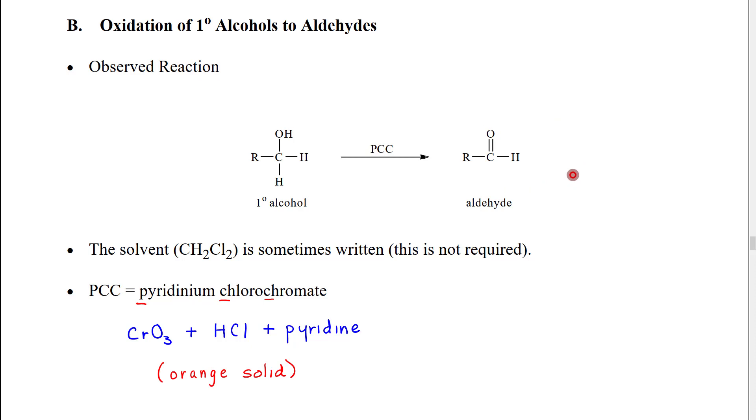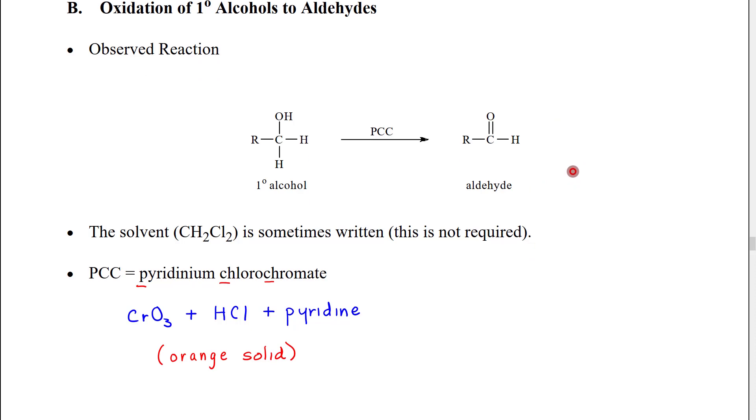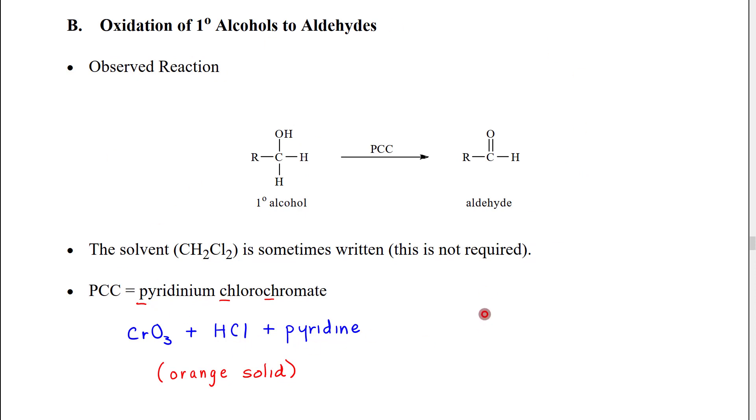Now just a little bit of details about this reaction. This reaction is generally run in dichloromethane solvent. We need to use a solvent that has some degree of polarity but that doesn't have alcohols or other things that might react with PCC. So hydrocarbon like dichloromethane is a really good choice.